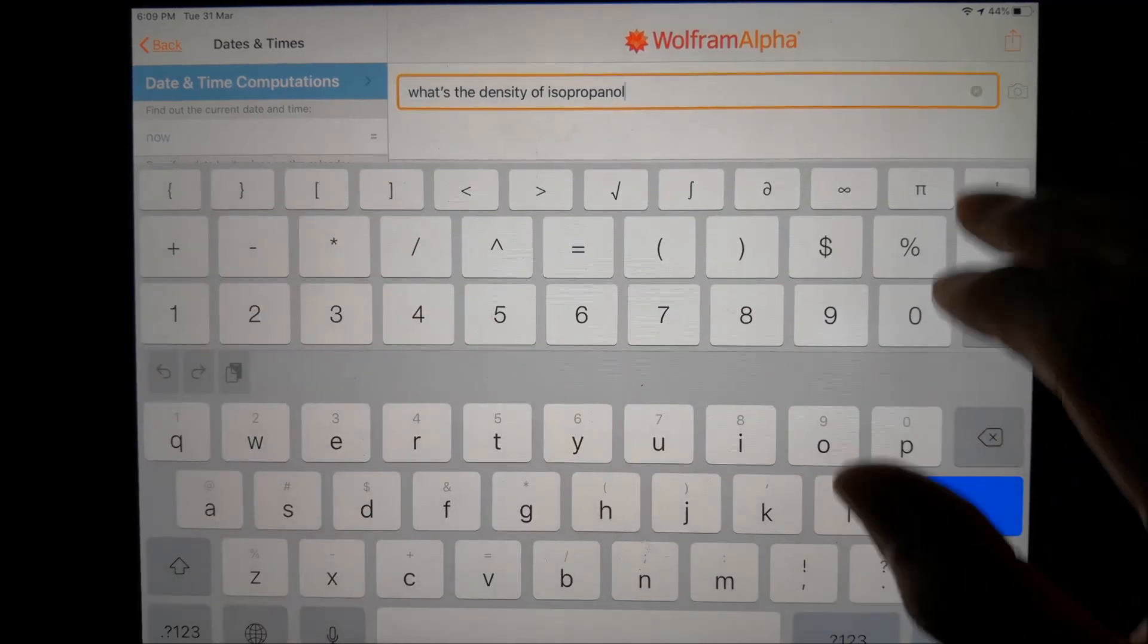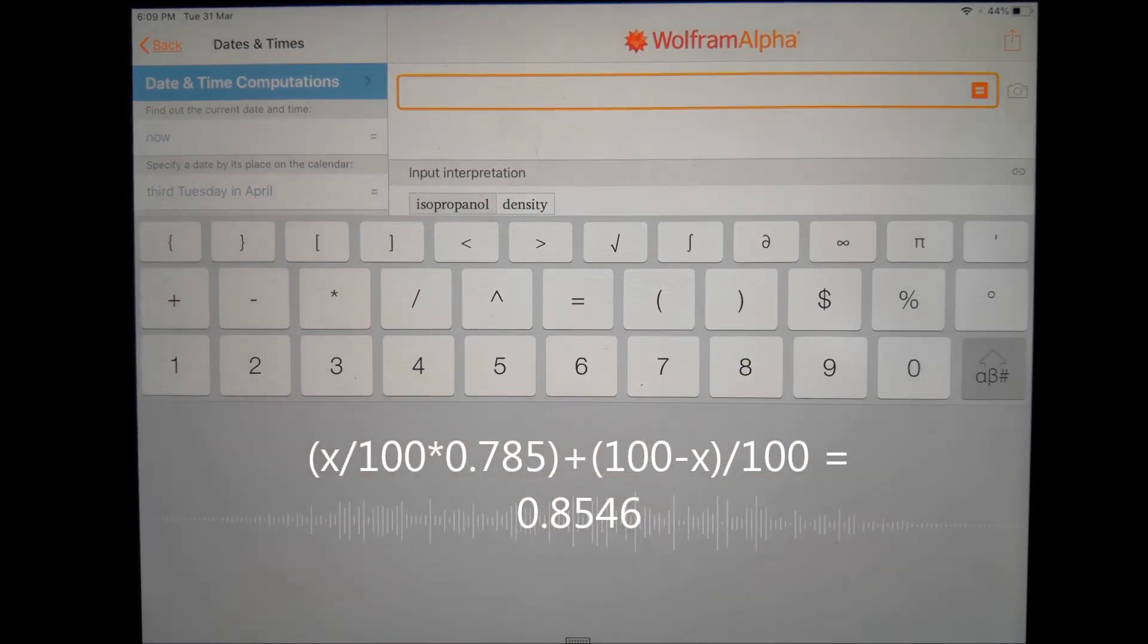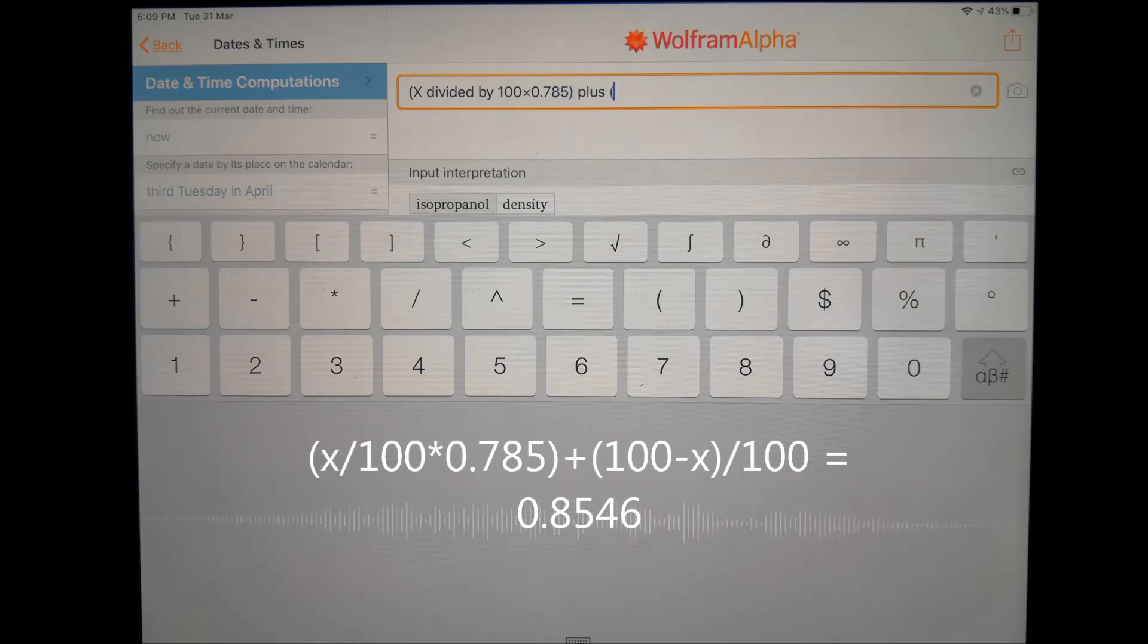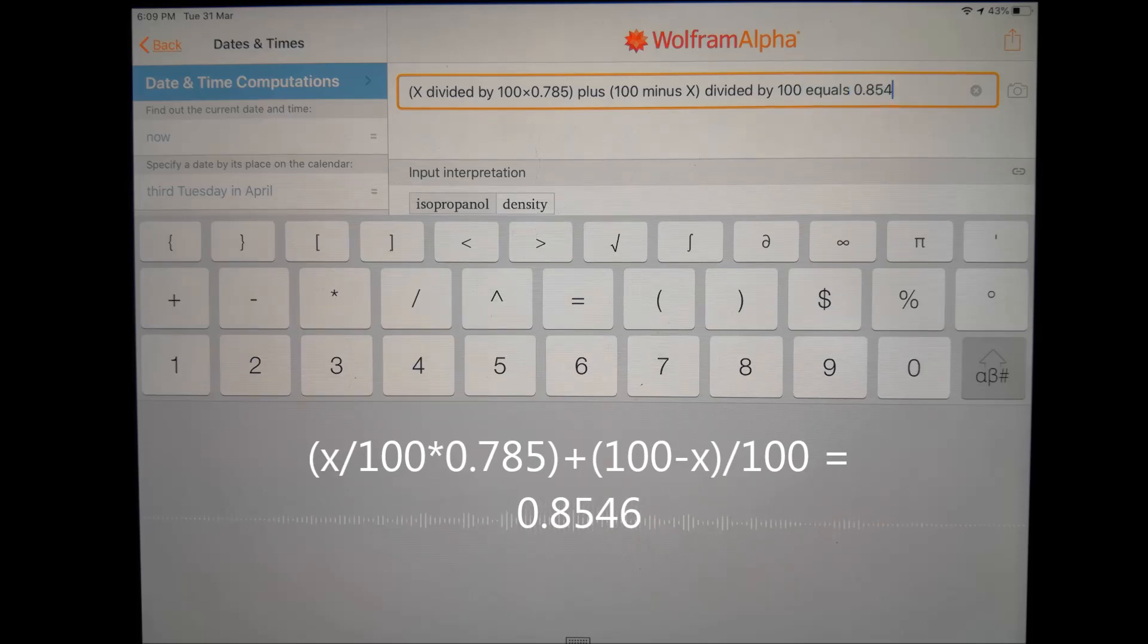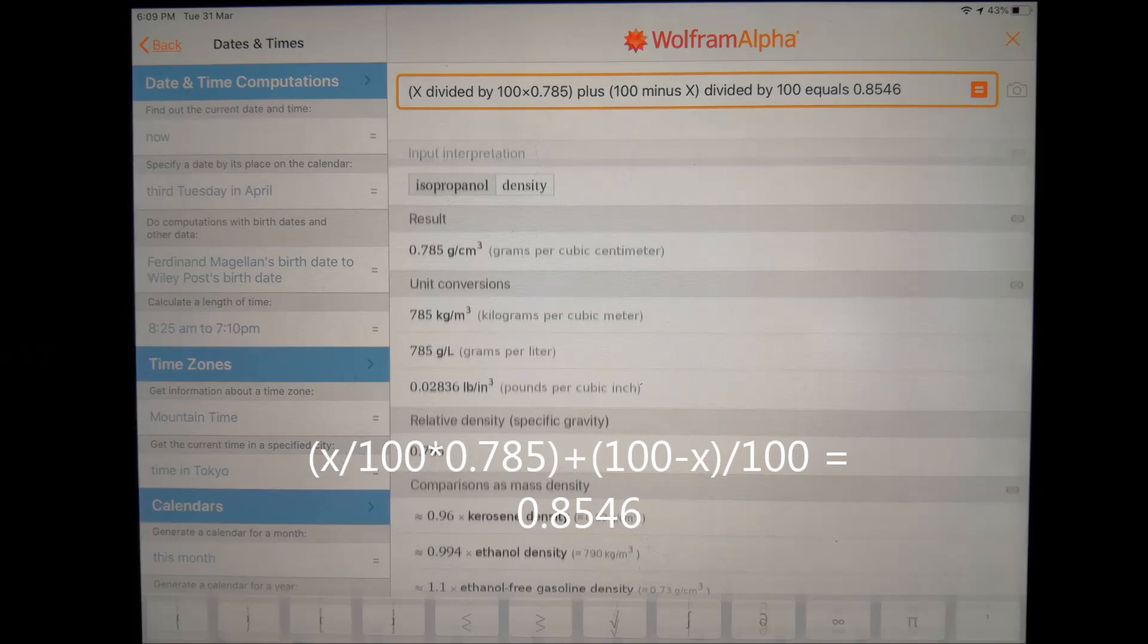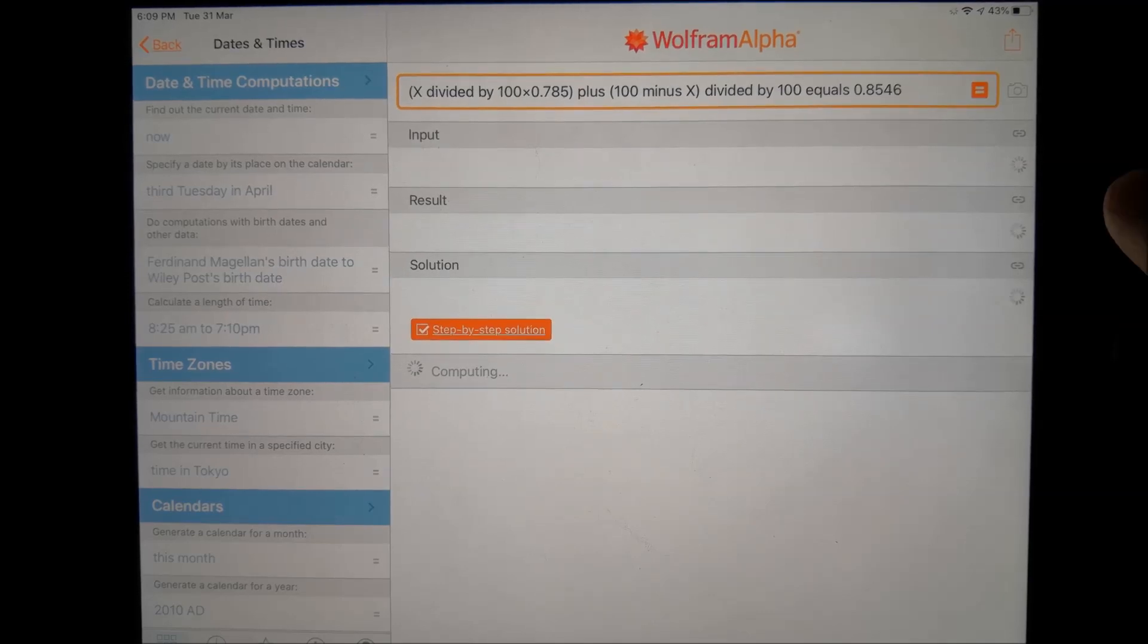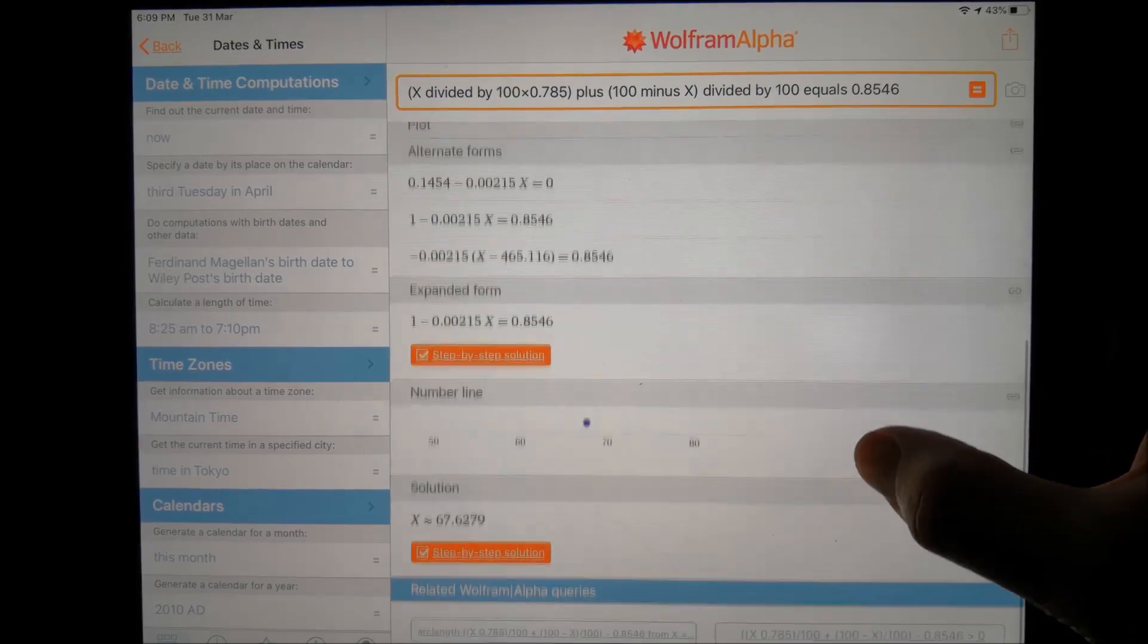Now for us to figure out, we've got to solve for x. Open parentheses x divided by 100 times 0.785 close parentheses plus open parentheses 100 minus x close parentheses divided by 100 equals 0.8546. Let's see. That one is correct. And let's see what the solution is.